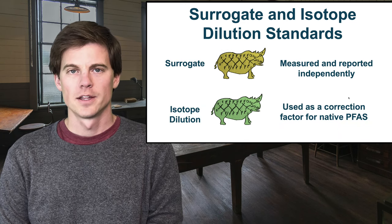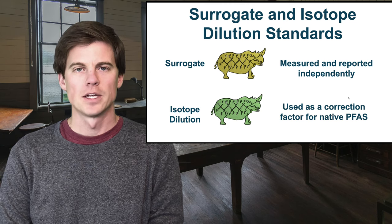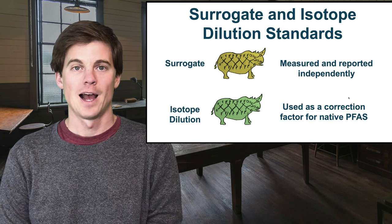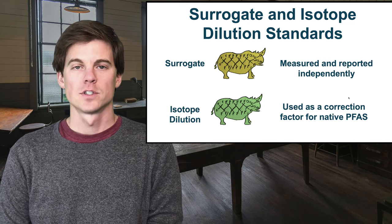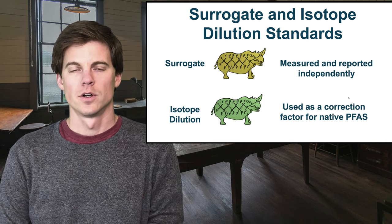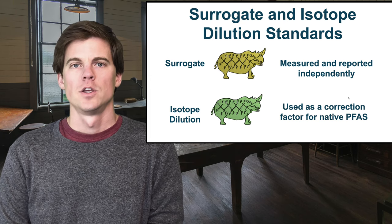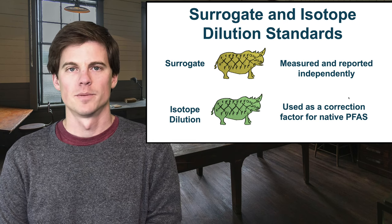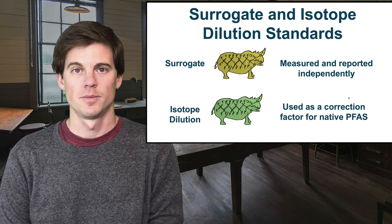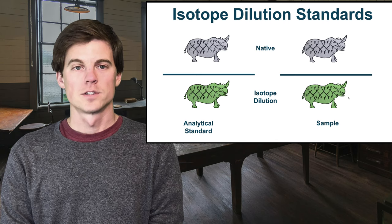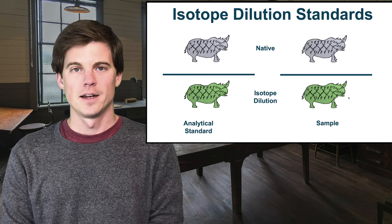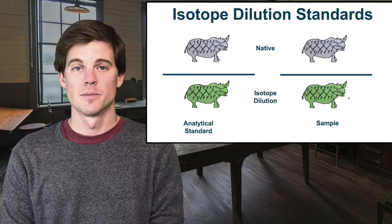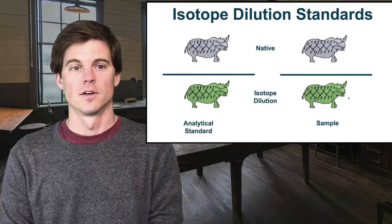The difference between surrogates and isotope dilution standards is that surrogates are measured and reported independently — you're actually measuring the surrogate and reporting how much you recovered. Versus an isotope dilution internal standard, where you're using it to correct for the native PFAS — making a response ratio between the isotope dilution standard and the native PFAS — and the ratio in a sample should match that in a similar-concentration analytical standard.